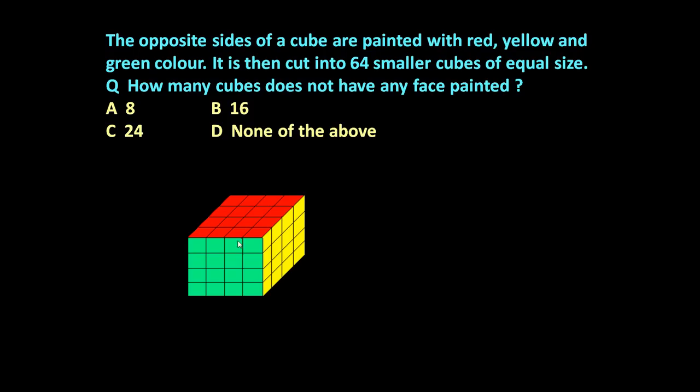So let us draw a cube. This is a cube. This face, top face is painted red and bottom is also painted red. This right side is painted yellow, left side is also painted yellow. Front side is painted green and back side is also painted green.